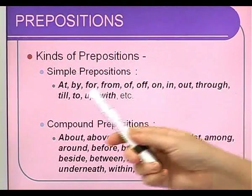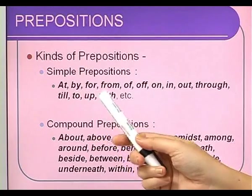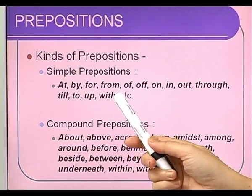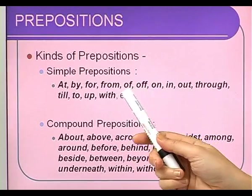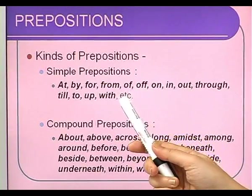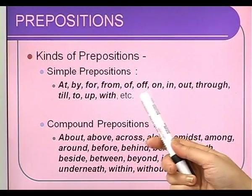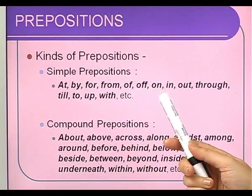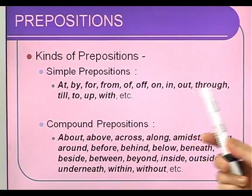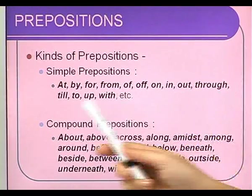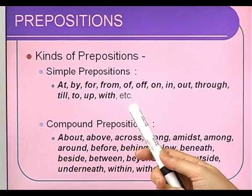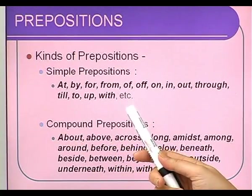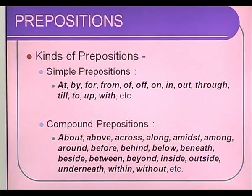Like you can see: at, by, for, from, off — be careful, this 'of' is with a single f, this 'off' is with a double f. On, in, out, through, till, to, up, with, etc. Let us take examples of each type to see how we can use it.